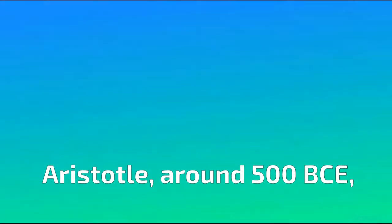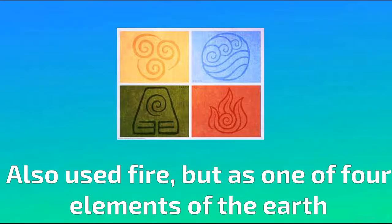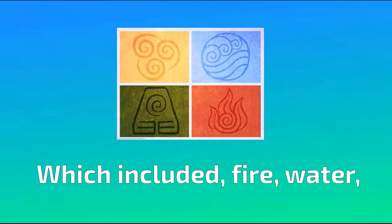Aristotle, around 350 BCE, also used fire, but as one of the four elements of the earth, which included fire, earth, water, and air. There was no particle in his model. This is where alchemy stems from, because all matter was thought to be made of these four elements.